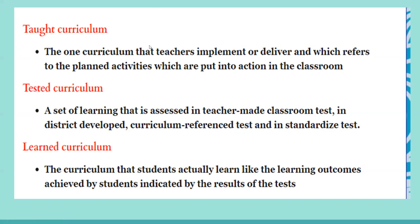The sixth type is the Learned Curriculum. This type indicates what the students have actually learned and can be measured through learning outcomes. A learning outcome can be manifested by what students can perform or do in their cognitive, affective, or psychomotor domains. The learning outcome can be determined by the results of the test and can be achieved through the use of learning objectives. Finally, there is the Hidden Curriculum, which basically refers to the unplanned or unintended curriculum but plays an important role in learning.